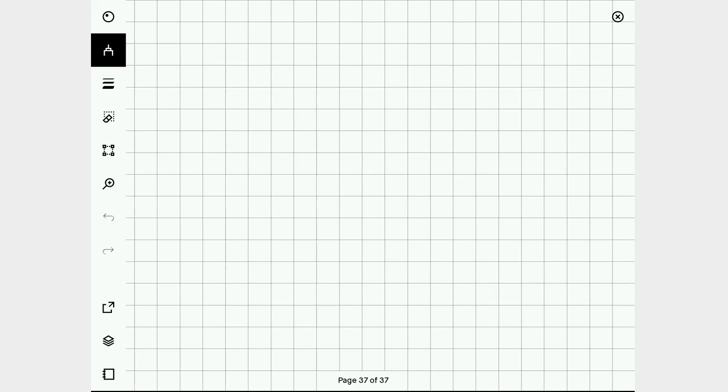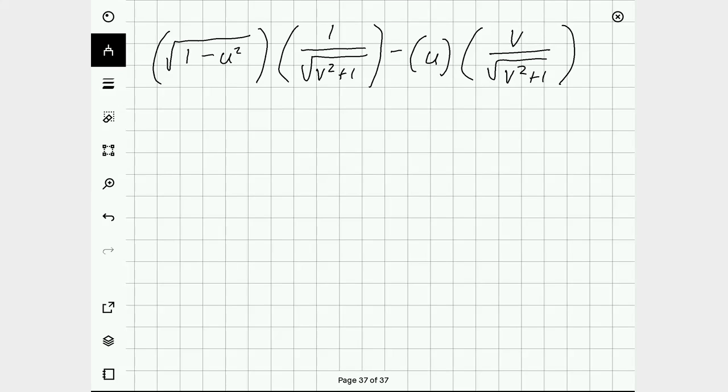I'll rewrite those on a clean page. So we have the square root of 1 minus u squared times 1 over the square root of v squared plus 1, minus u times v over the square root of v squared plus 1.